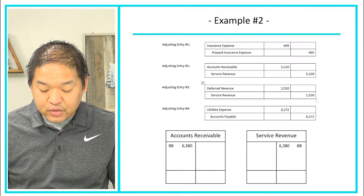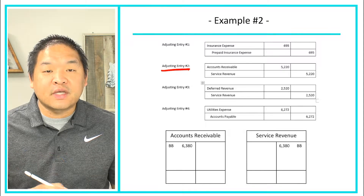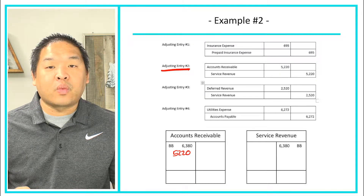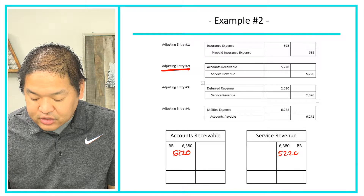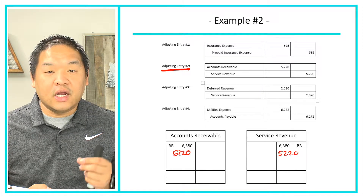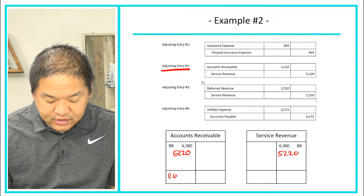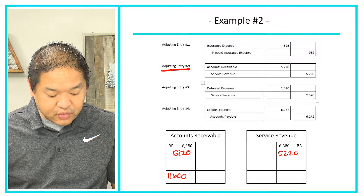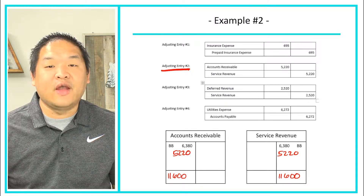For the second journal entry, we've got a debit to accounts receivable for $5,220 — that goes to the left side of the accounts receivable T-account. On the right-hand side is service revenue, which is a credit, so we put $5,220 there. Adding up all the debits to accounts receivable: $5,220 plus $6,380 gives us $11,600. On service revenue, $6,380 plus $5,220 also gives us $11,600.